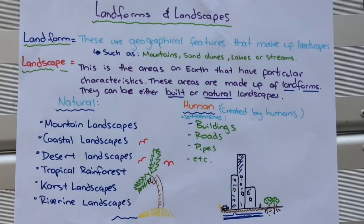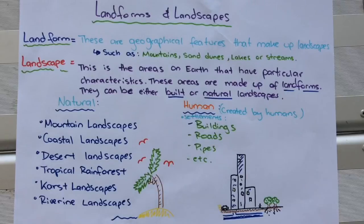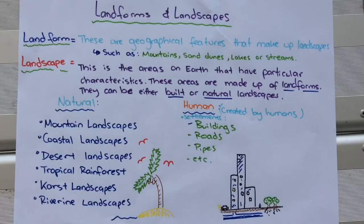Let's summarize the main points again. Landforms are what make up landscapes — they're the features of a landscape. On the earth, there are different landscapes categorized by the types of landforms that they have within them.